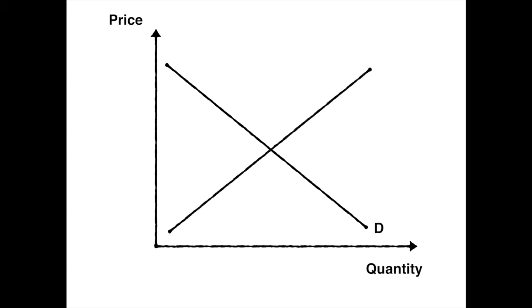The supply curve is upward sloping due to seller behaviour and the law of supply tells us that as price rises for a good, quantity supplied will increase and we label this line S.